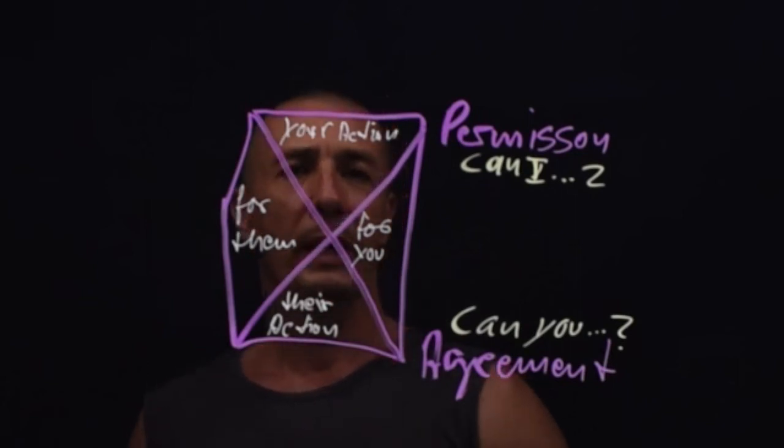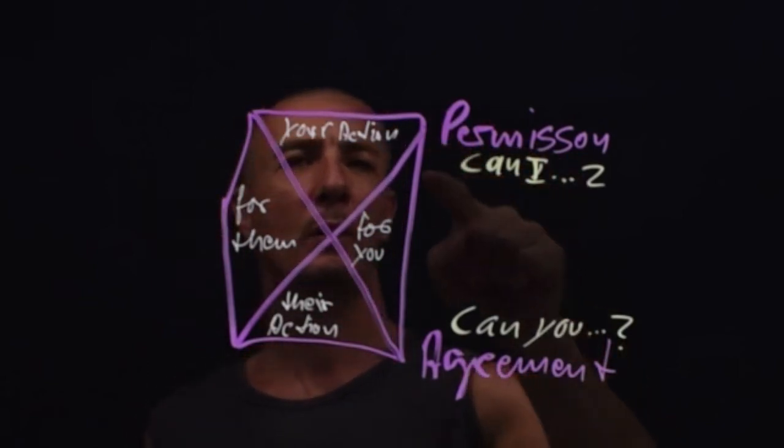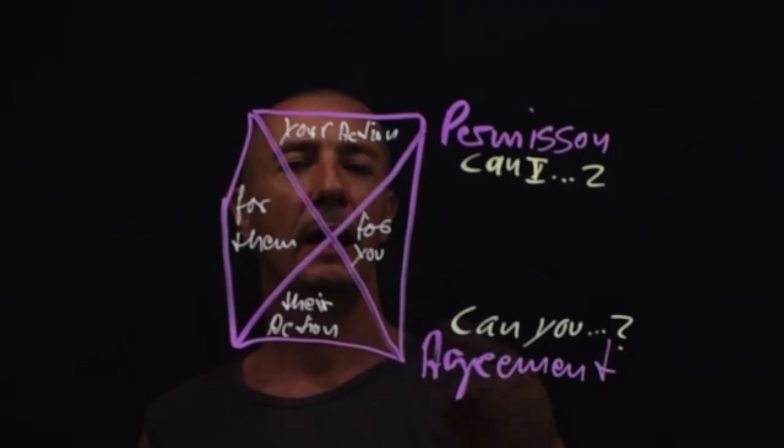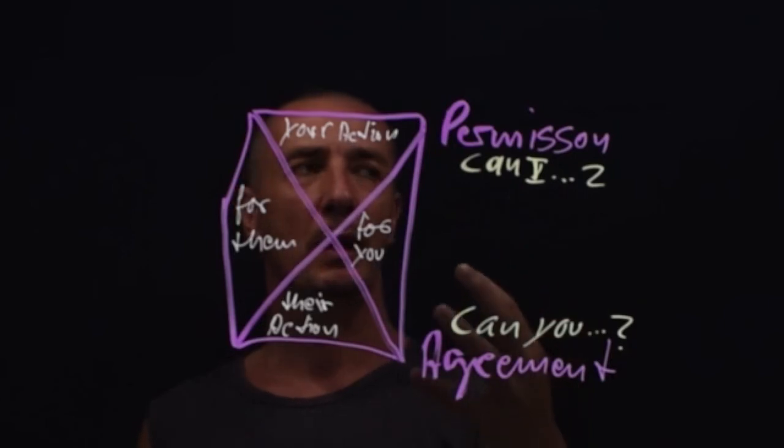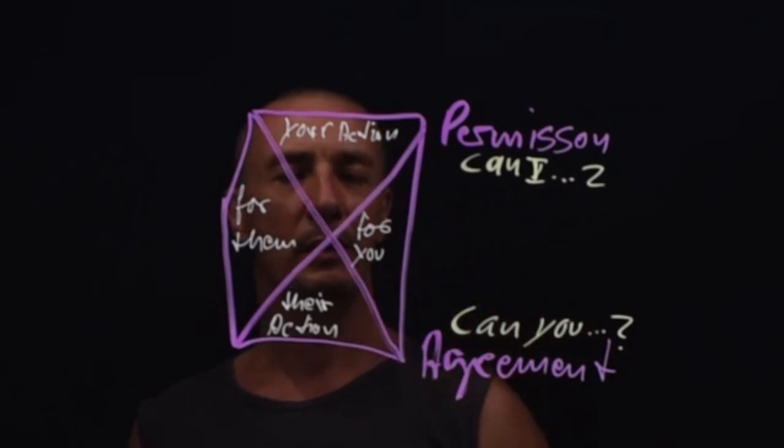So when you want to go on action, it is for you. You need to ask for permission. Can I. And when you want their action for you, you need to ask, can you. So that makes this dynamic very simple, very easy to practice making requests.